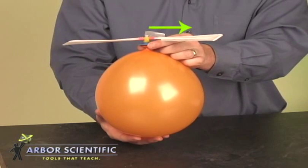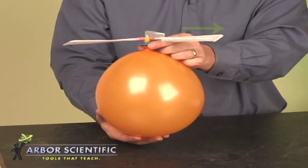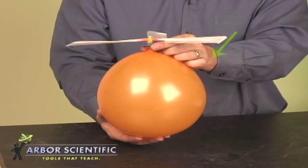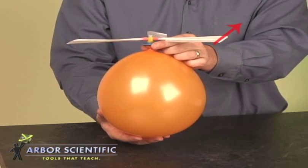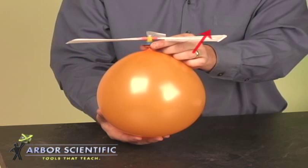The helicopter kit diverts the air sideways through the blades. The blades force the air sideways and the air forces the blades back the other way. This force causes the blades to spin.